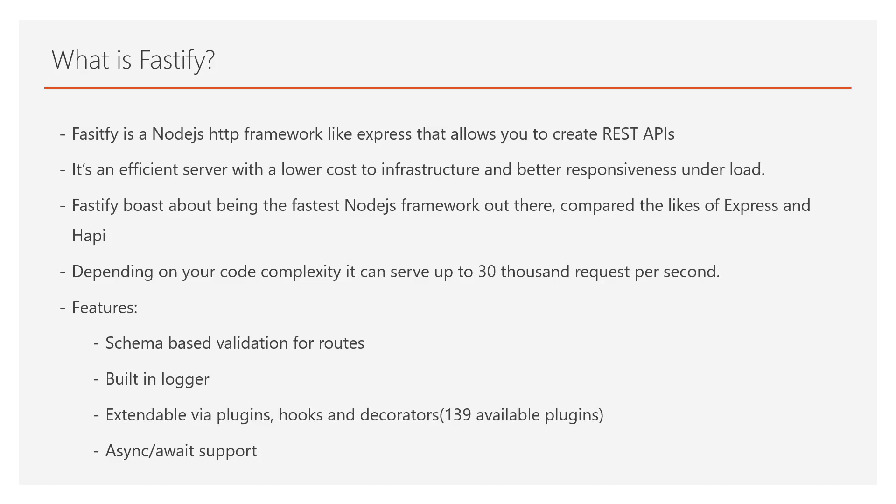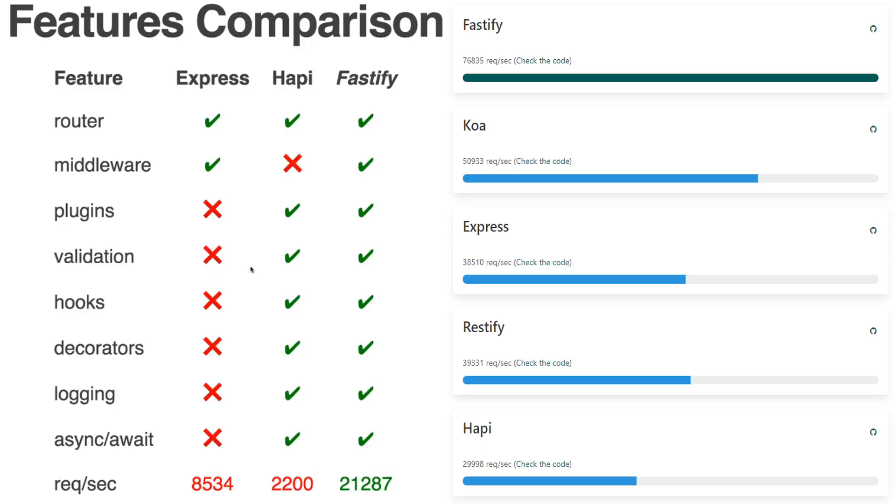Fastify also provides a lot of key features. One is schema-based validation for routes — you don't need to import another library to do validation on the request. It has a built-in logger so requests are logged entering and exiting the server. It's extendable via plugins, hooks, and decorators, and natively it provides async/await support, which is mainly what I'll be using.